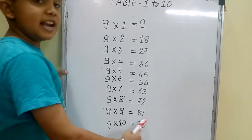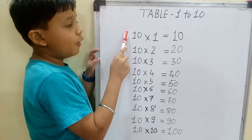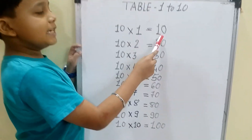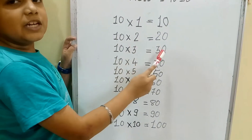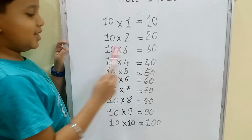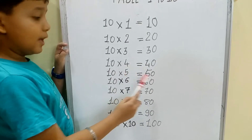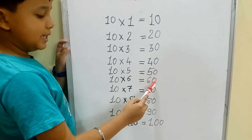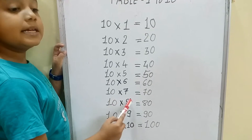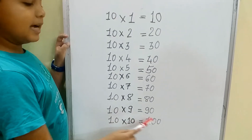Nine tens are ninety. Now we are on the table of ten, the last table. Ten ones are ten, ten twos are twenty, ten threes are thirty, ten fours are forty, ten fives are fifty, ten sixes are sixty, ten sevens are seventy, ten eights are eighty, ten nines are ninety, ten tens are one hundred.